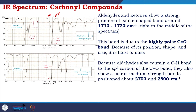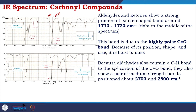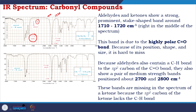Because aldehydes also contain a CH bond to the SP2 carbon of the carbonyl, they show a pair of medium strength bands at about 2700 and 2800 cm⁻¹. For ketones, this CH bond is absent, so these bands are not observed. This is a significant difference allowing you to differentiate between an aldehyde and a ketone based on IR spectrum.